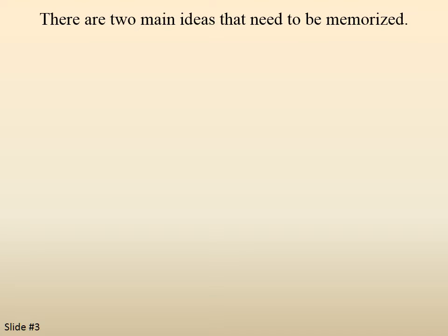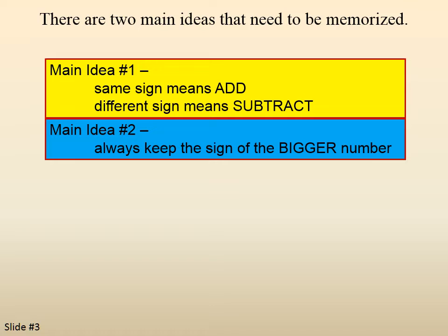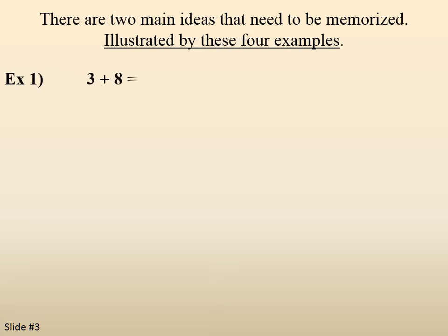There are two main ideas that need to be memorized. If the two numbers have the same sign, you're going to be adding them. A different sign means subtract — if the two numbers have different signs, one positive and one negative, then we're going to subtract the numbers. This is for adding and subtracting; multiplying and dividing is different. If the two numbers are the same sign, we add them; if the signs are different, we subtract them. And the result — we're always going to keep the sign of the bigger number. I'm going to illustrate that with these four examples.